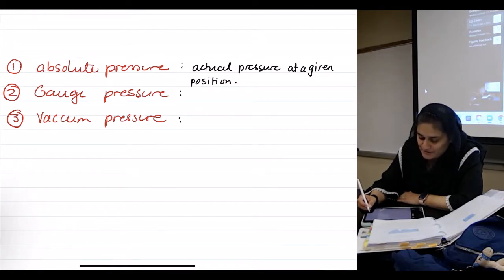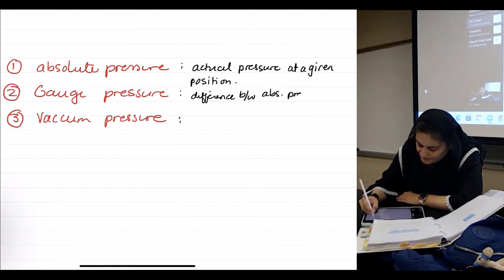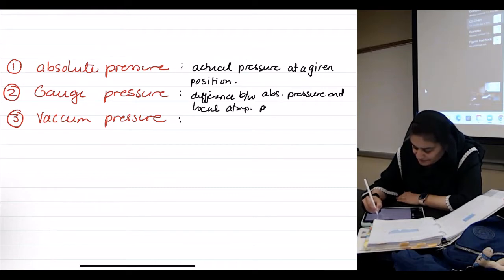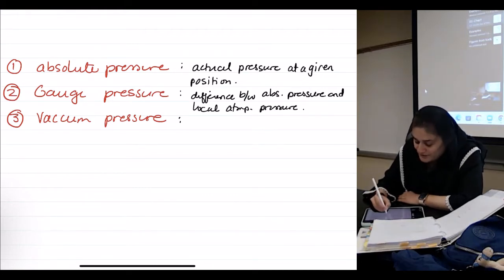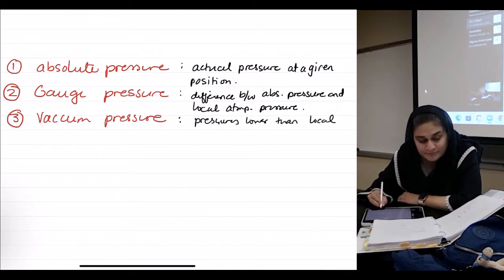Gauge pressure is the difference between absolute pressure and local atmospheric pressure. And vacuum pressure is pressures lower than local pressures.